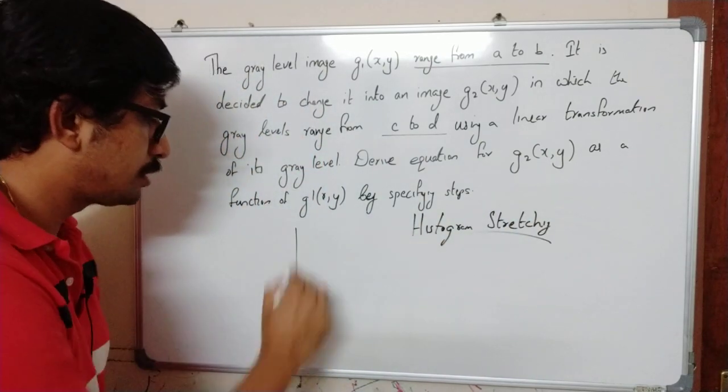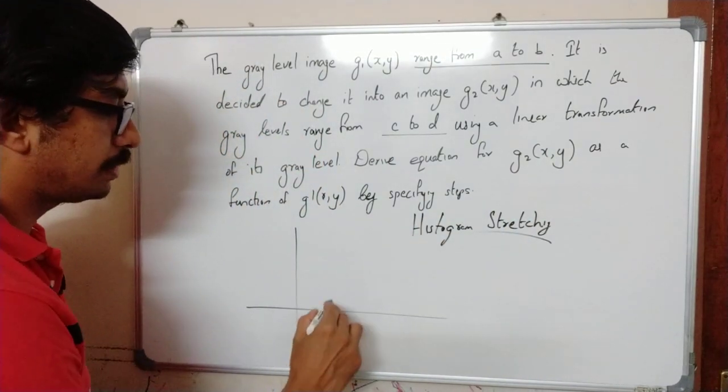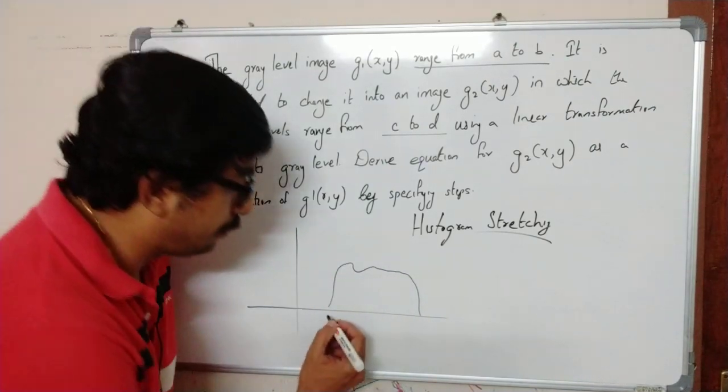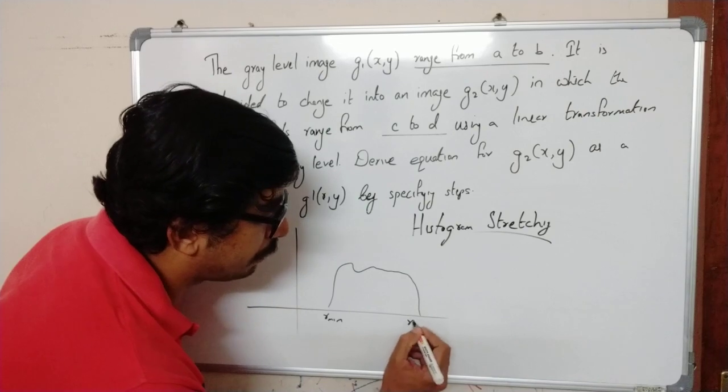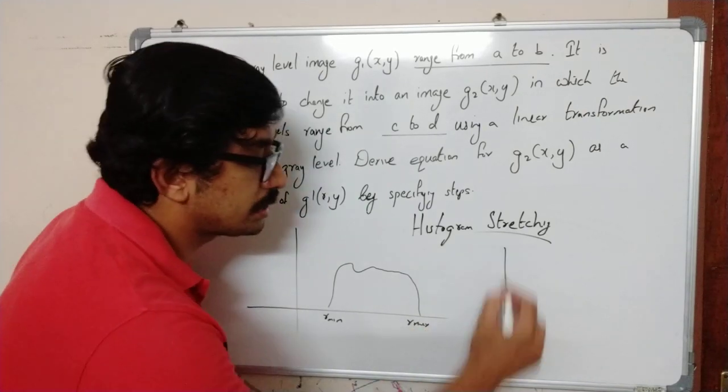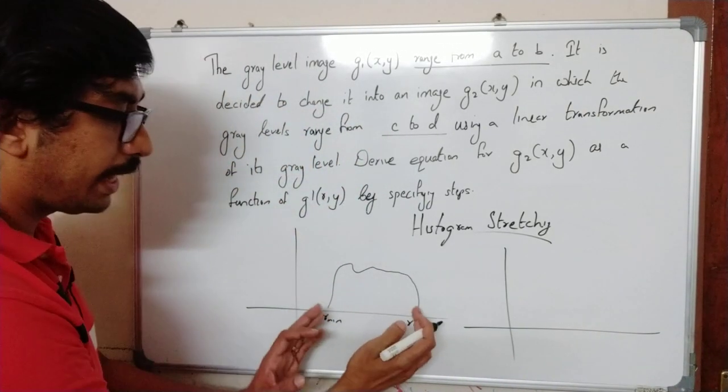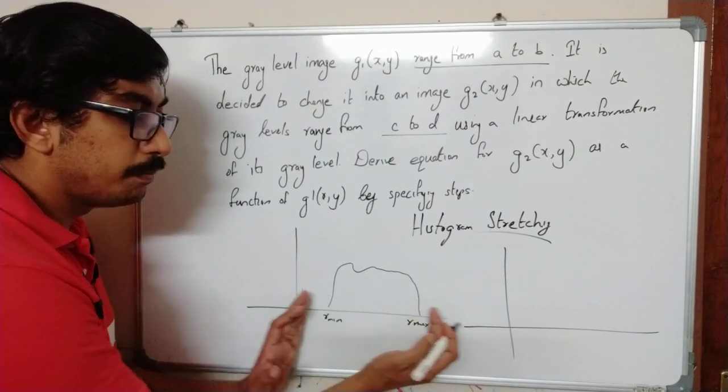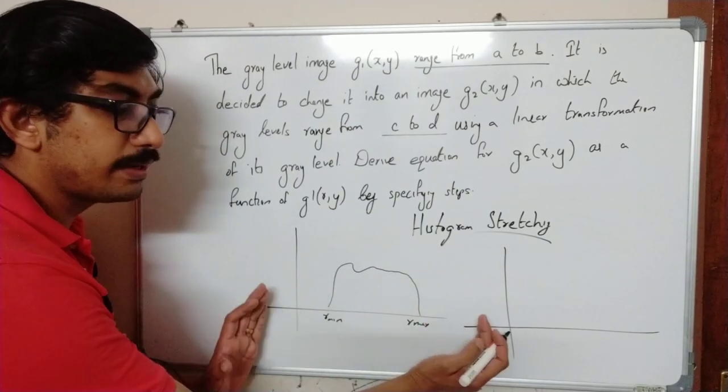So what we do here is, suppose we have an original image and this is the histogram distribution from R min to R max. In histogram stretching what we do is we actually stretch this range, stretch the range of pixel distribution or gray level intensity.